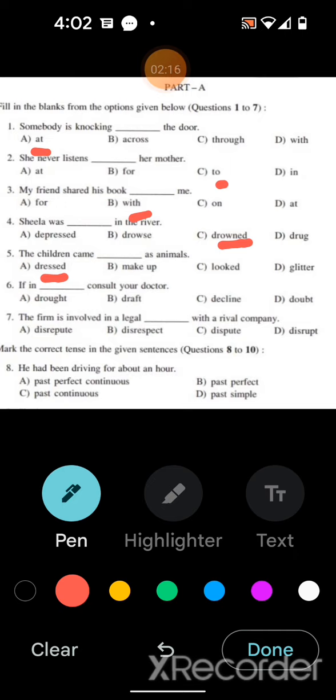Sixth sentence: if in drought, first option, consult your doctor. Because drought means extreme difficult situation, SOS condition. Draft means to write. Decline means downfall. Doubt means suspicion. So that's why drought is the correct option.